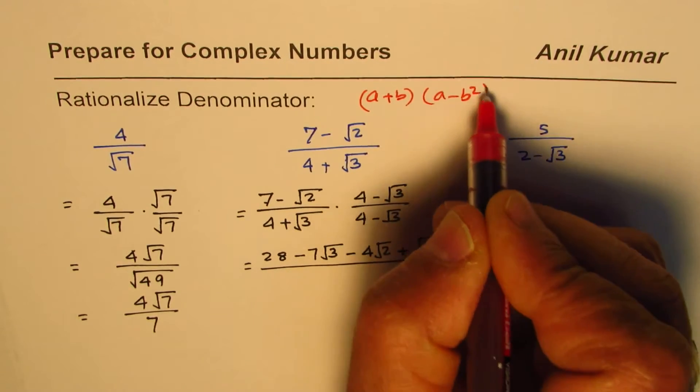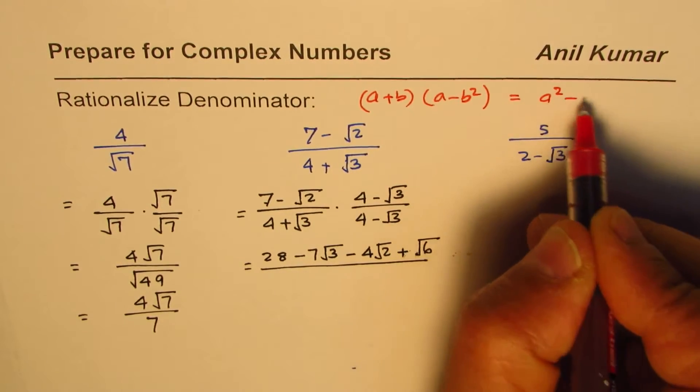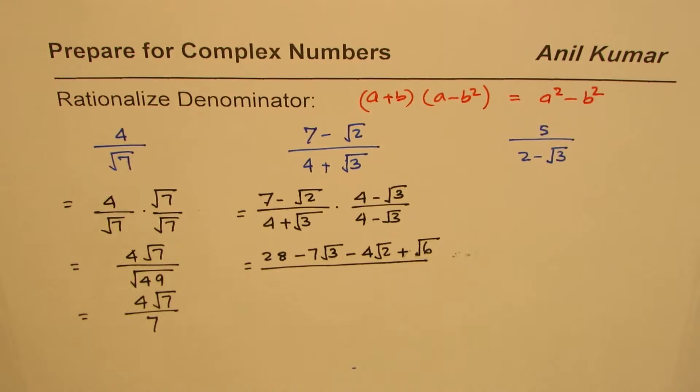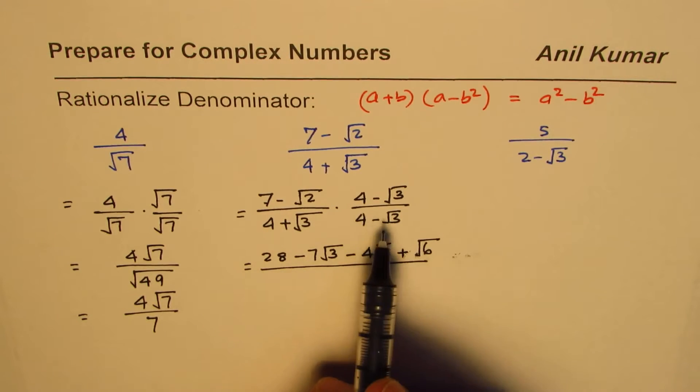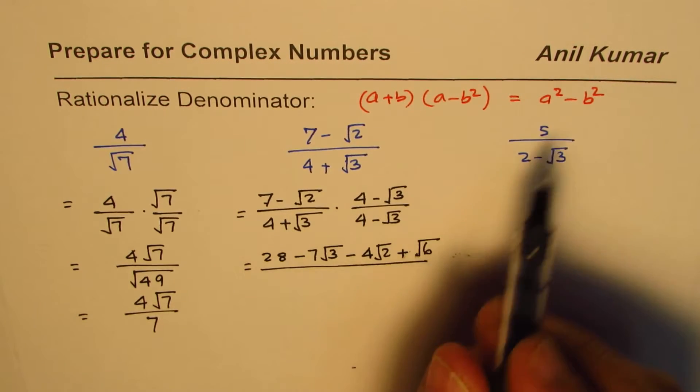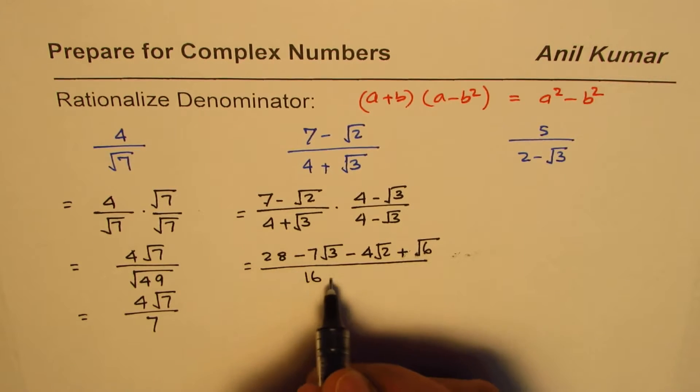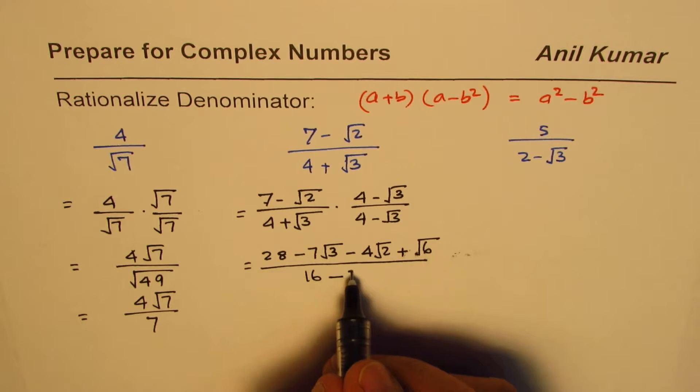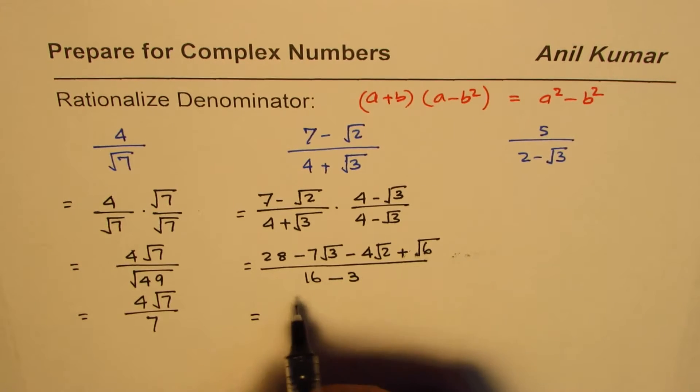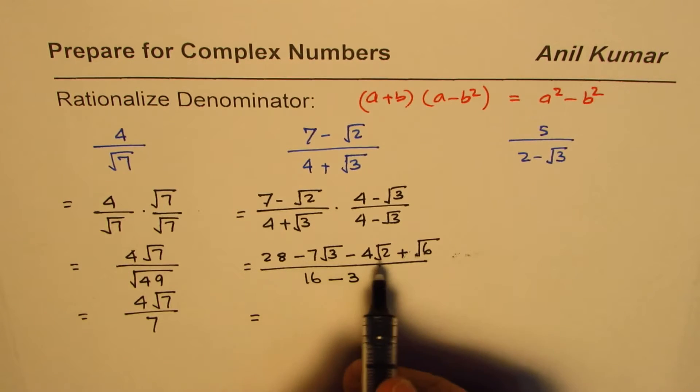We'll apply this formula straight—you could actually expand and then simplify also. So a squared minus b squared means square of 4 is 16 minus square root 3 squared is 3. So this is what you get.